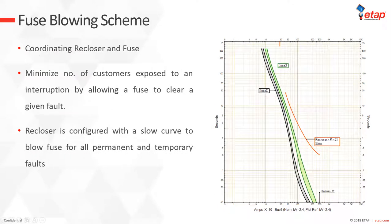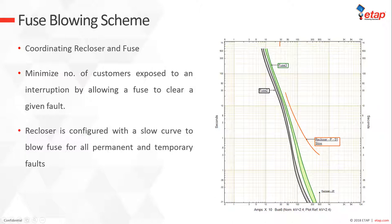The fuse blowing scheme is completely opposite to the fuse saving scheme. The objective is to let the fuse blow without impacting other parts of the system due to reclosing shots. We try to minimize the number of customers exposed to an interruption by allowing a fuse to clear a given fault. The fuse blowing scheme may also be referred to as a trip saving scheme — we do not use the fast curve of the recloser, only the slow curve, to blow the fuse for all permanent and temporary faults. Reclosing is only done if the fuses fail to clear the fault.